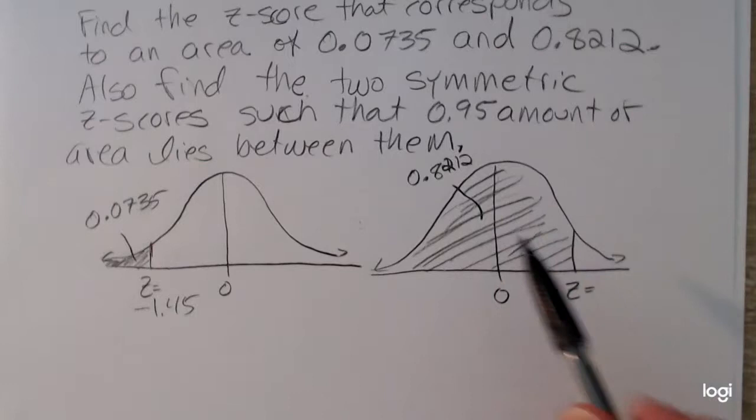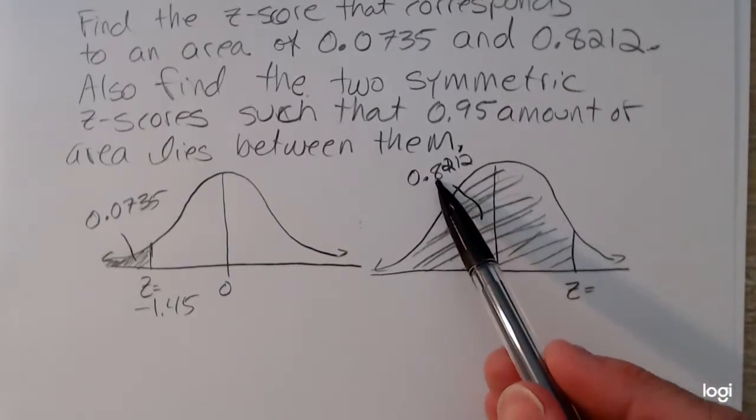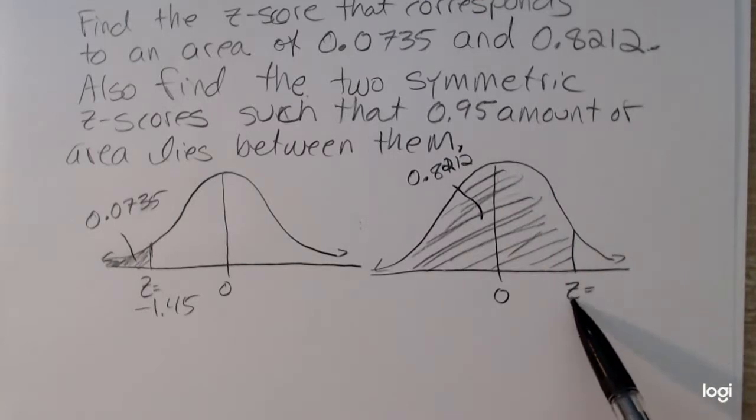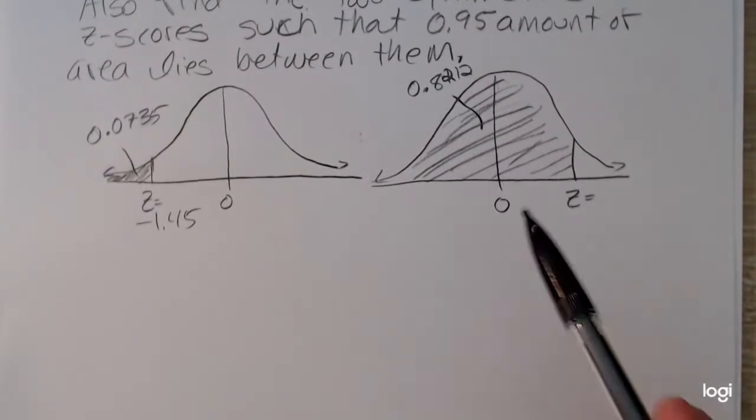So we're working in reverse. We're working backward. Our input now is an area or a probability, and our output is a z-score. That's different than my last several examples where we were given a z-score first, then finding that area or the probability.